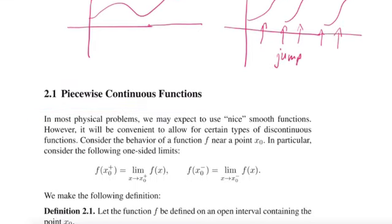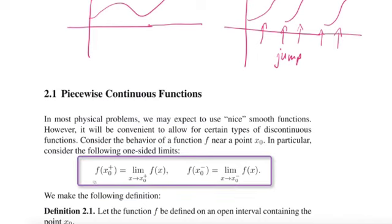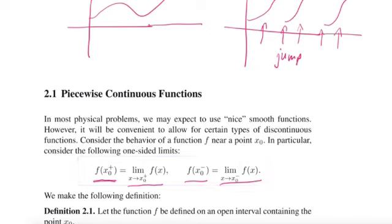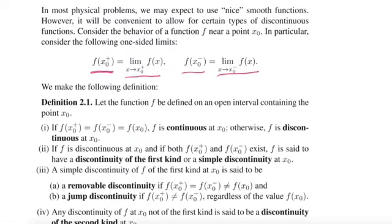You might remember on jumps, we can talk about left-sided and right-sided limits, going back to calculus. I denote f of x0 plus to be the right-sided limit, and f of x0 minus to be the left-sided limit. And then we have learned already that if the left-sided limit and the right-sided limit coincide, then we have a continuous function.